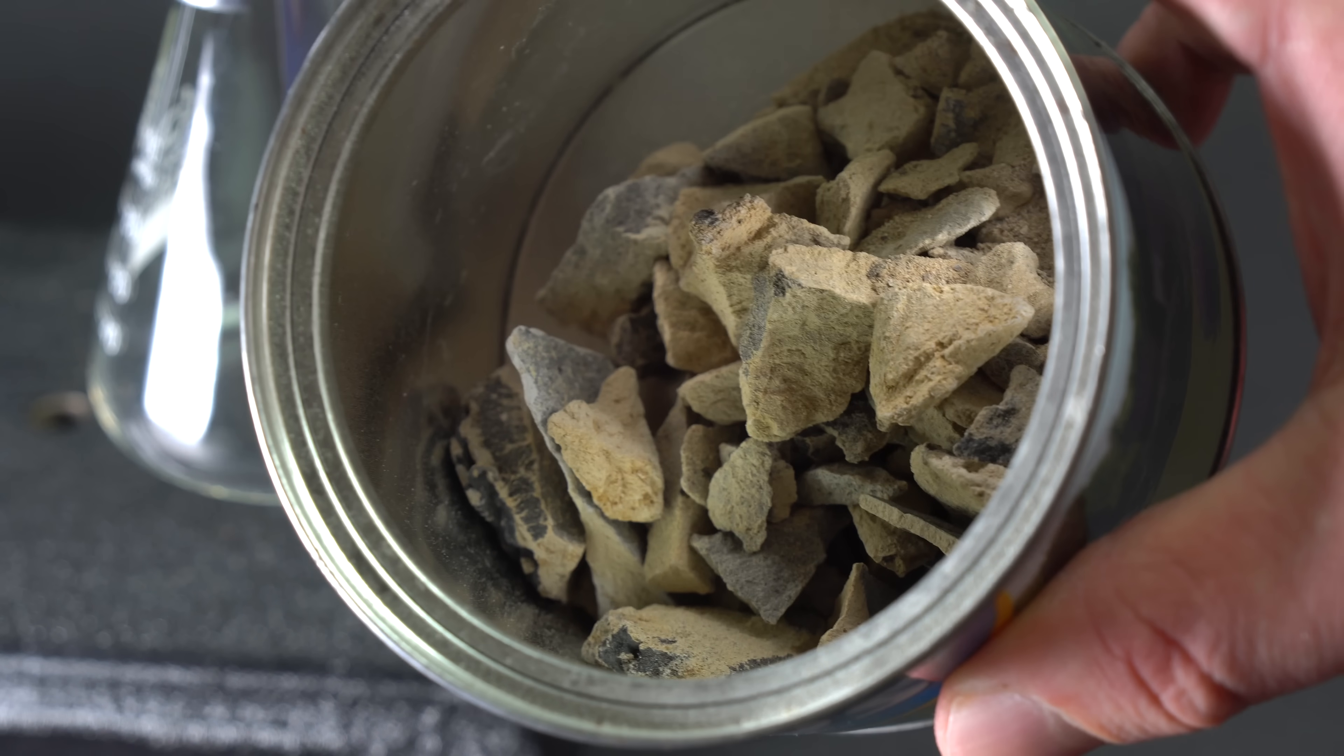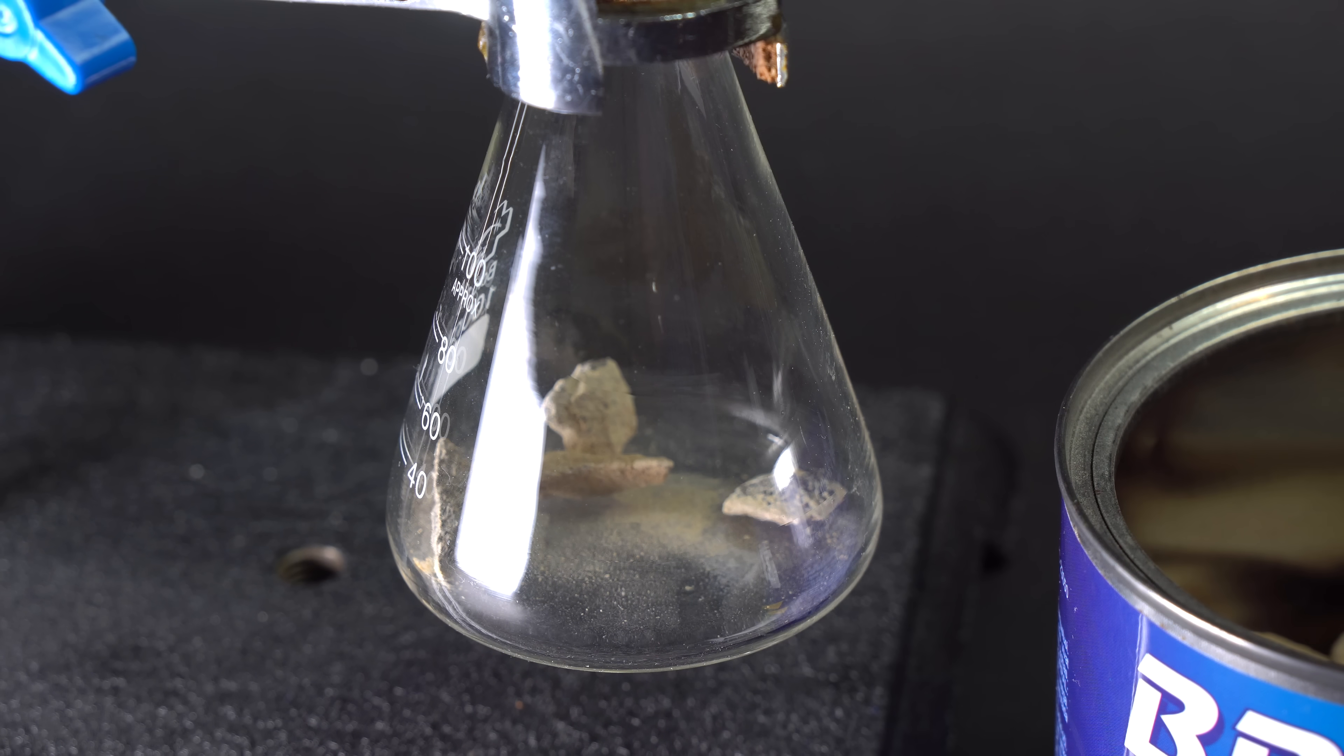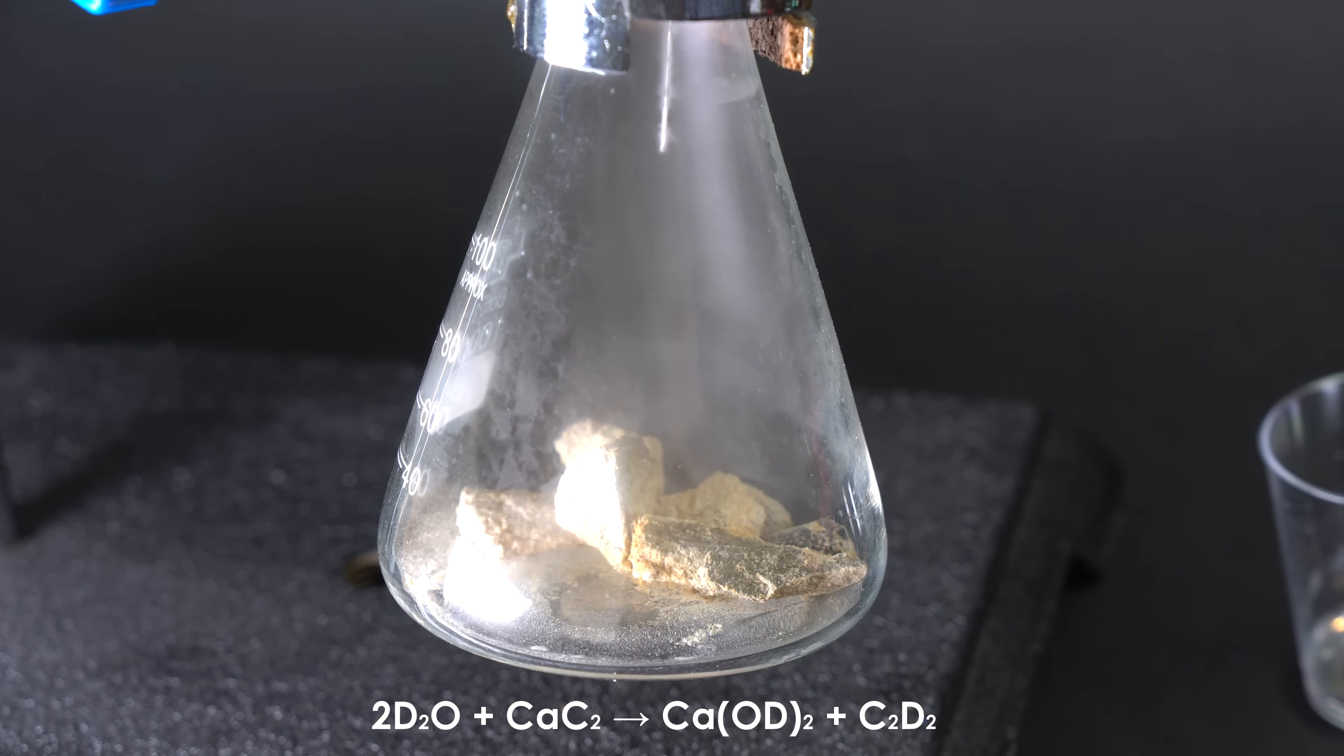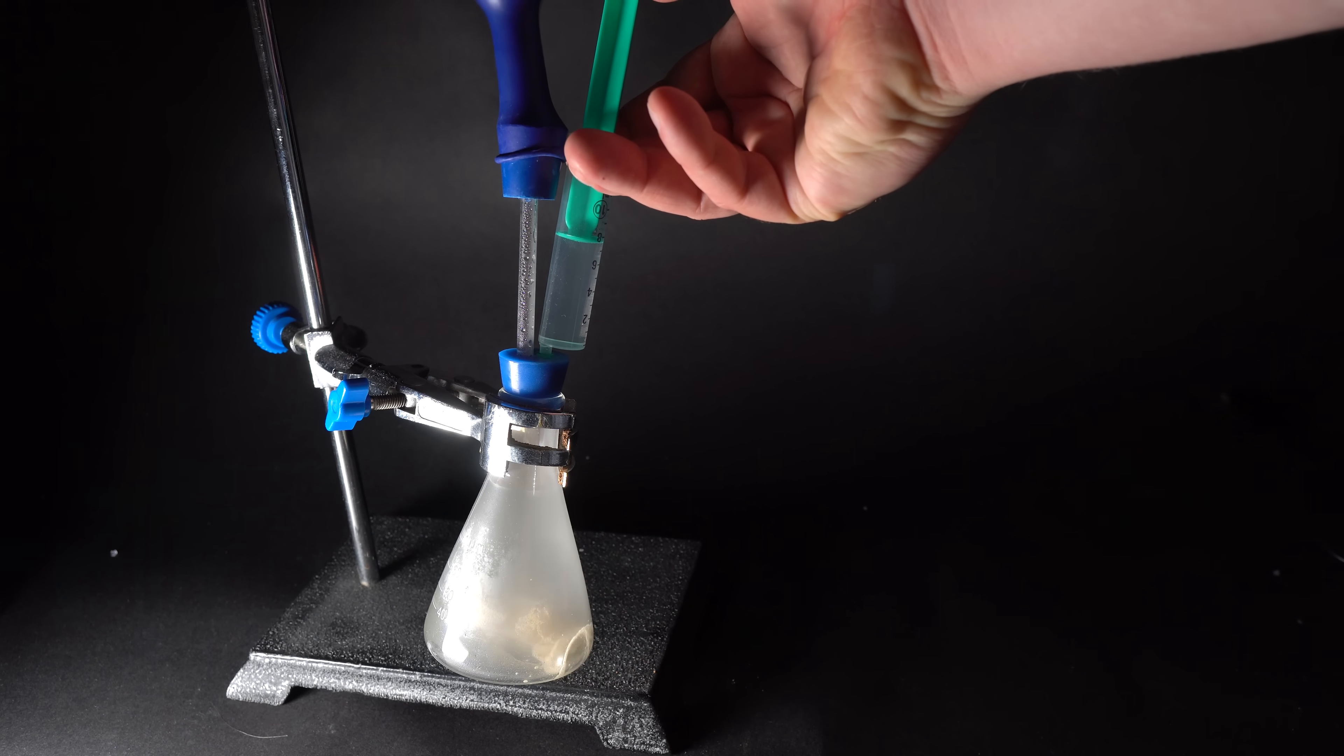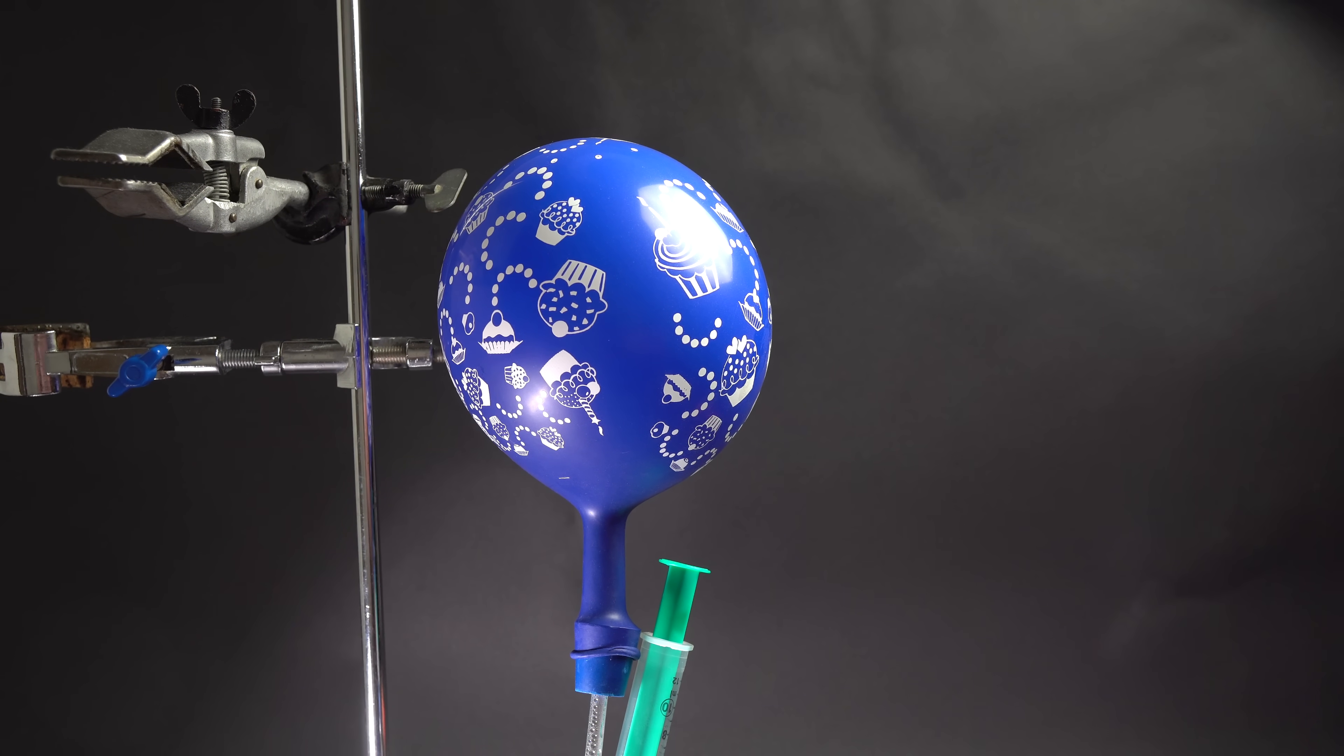After running the reaction used for obtaining deuterium, I decided to obtain deuterated acetylene. For that, instead of metallic calcium, I put pieces of calcium carbide into the flask. After that, I began adding drops of heavy water. I collected the produced deuterated acetylene into a balloon. For comparison, I filled another balloon with regular acetylene, obtained from the reaction between calcium carbide and regular water.